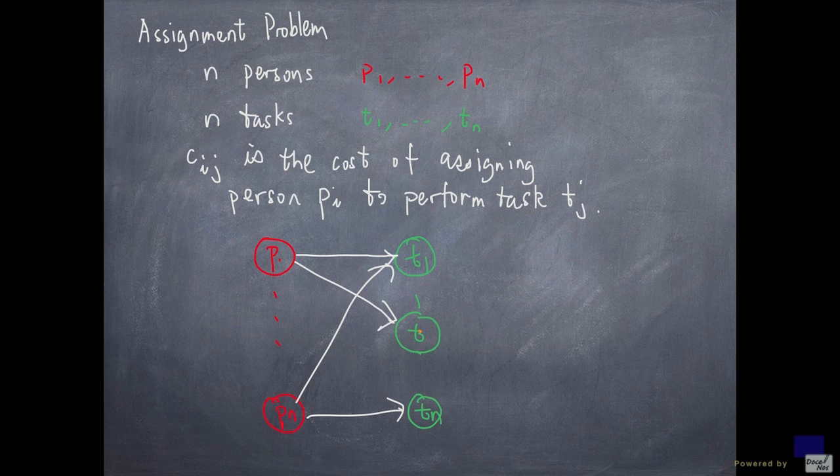If I have a tj indicating a generic task, it will be right there. And if I have a generic person called pi, it will be right there, and then I have all these arcs, and so on.